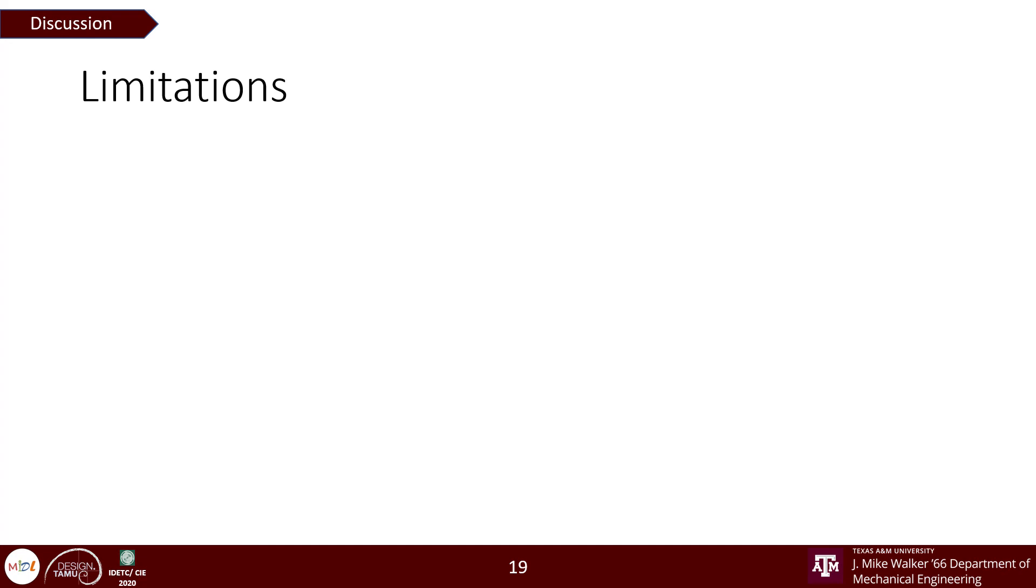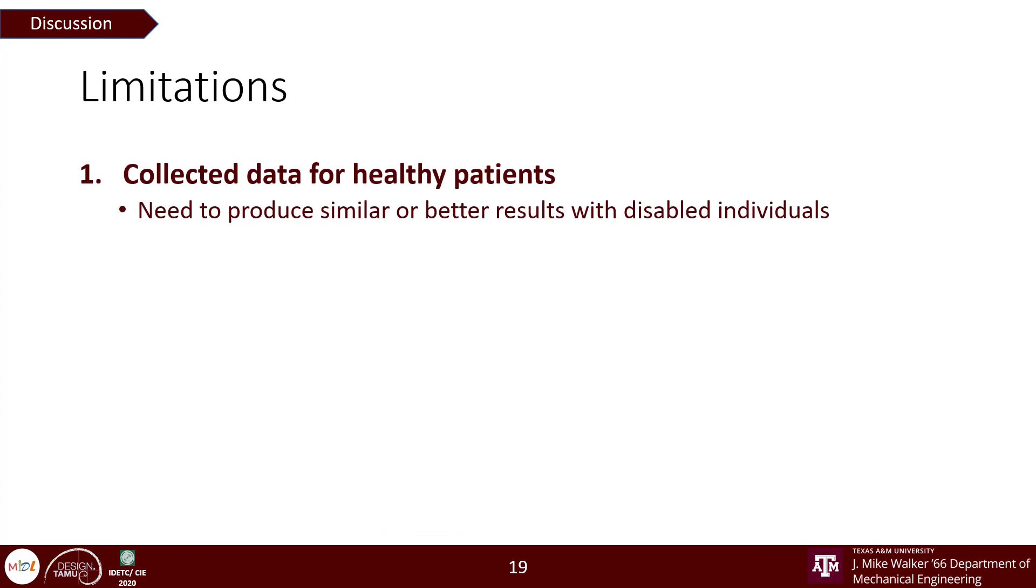Our work is an exploratory study towards quantifying kinesthetic perceptual symmetry, but it comes with a few limitations. We collected data only for healthy patients and we look forward to conduct the same experiments with patients having sensory motor disabilities. In this work, we focus only on the haptics data. Since we are talking about perceptual symmetry in the brain, we could also look into EEG data in the future.